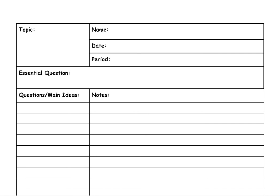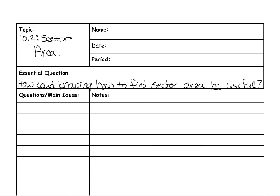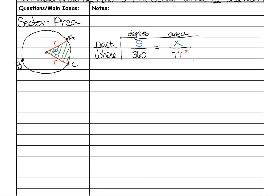Today we're going to go over sector area. These notes will be very similar to the 10-1 notes because you do everything the exact same, except instead of using circumference, we're going to use area. Our essential question is: how could knowing how to find sector area be useful? The sector area formula looks very similar to arc length, but it uses the area formula instead of the circumference formula.